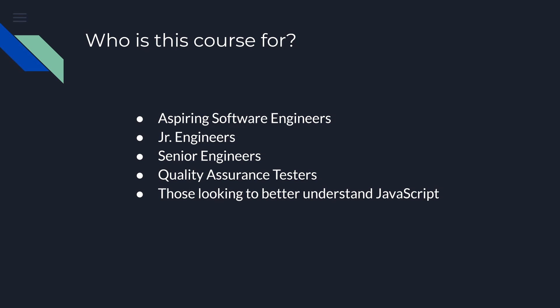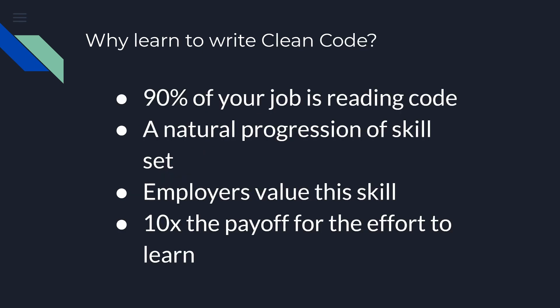A lot of senior engineers — brilliant people — don't write clean code, and that's a problem. Some brilliant individuals think adding simplicity is dumbing down the code, but that's not the case. You want your code to be easily readable. Some engineers who call themselves senior really aren't because they've only repeated the same year ten times. If you're in QA, writing clean code means writing clean integration tests and unit tests. For those just looking to understand JavaScript better, we're working with JavaScript and you'll gain much better understanding. Ninety percent of your job is reading code — even in greenfield development.